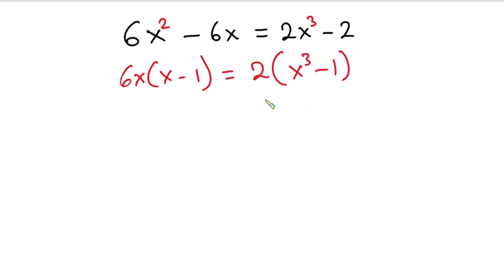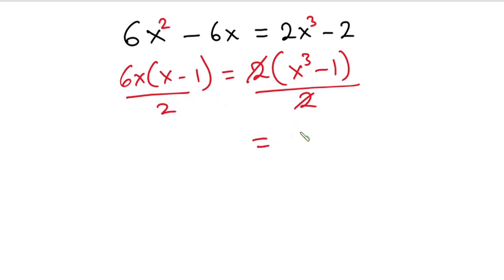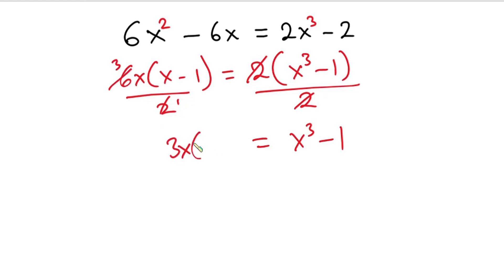Now let's go ahead and divide each side of this equation by 2, so that the 2s cancel. Now we have the right-hand side to be x to the third power minus 1. Considering the left-hand side, 2 goes into 6 three times. So we have 3x into x minus 1.